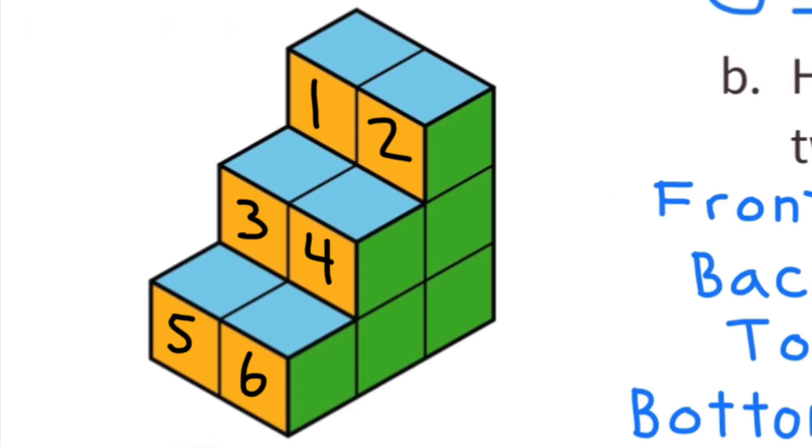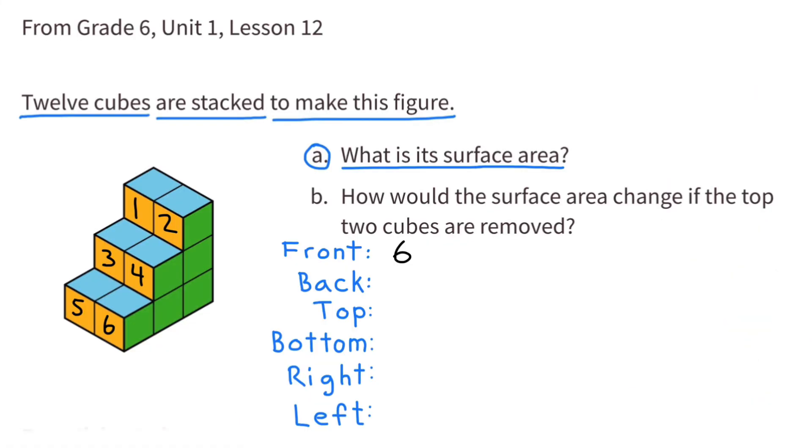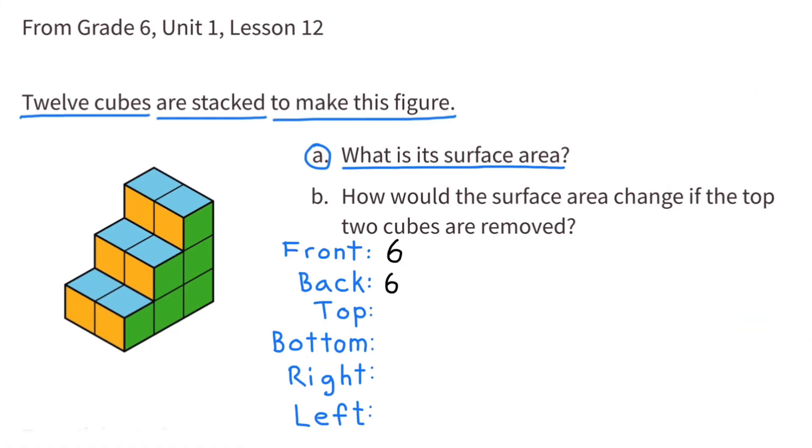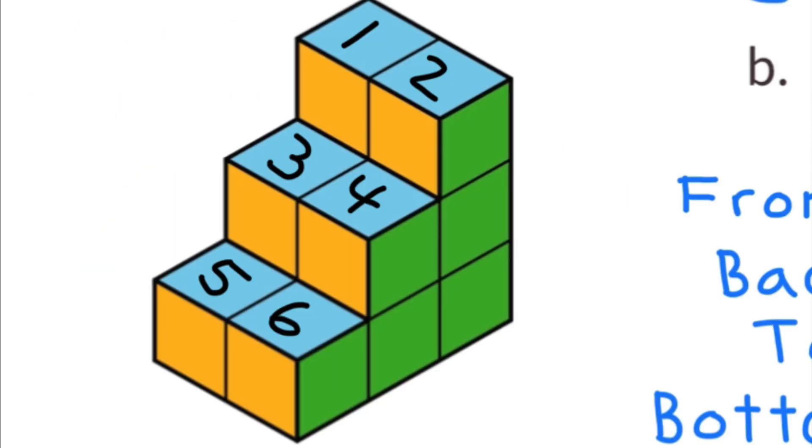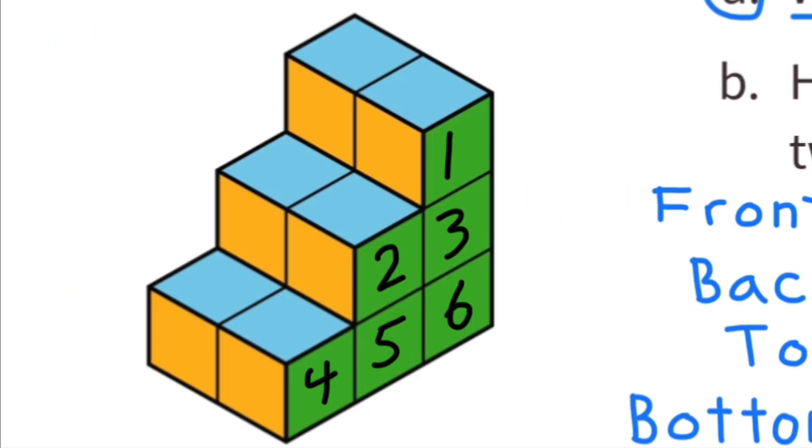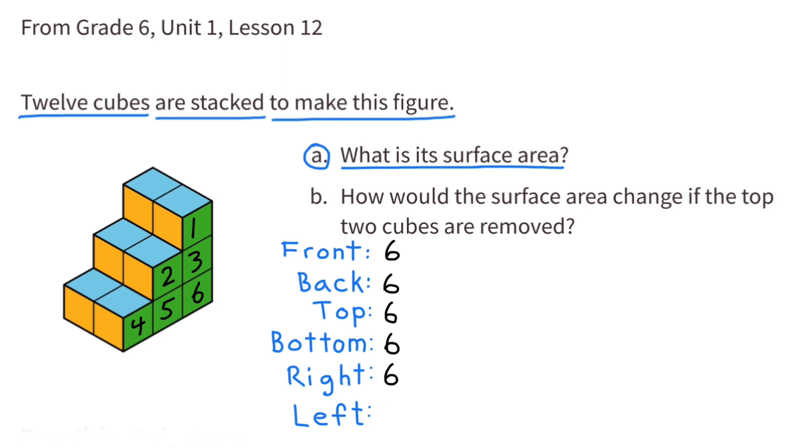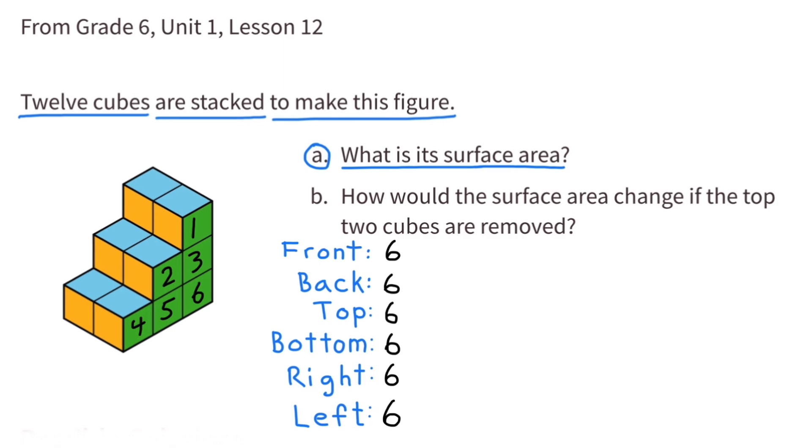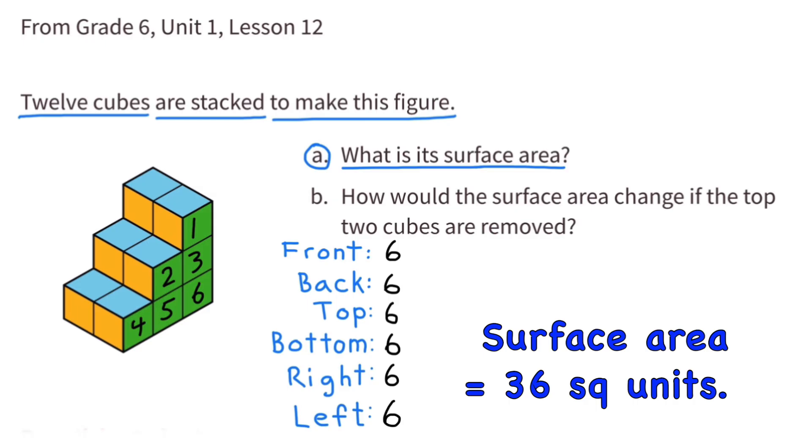Represented in gold and numbered 1 through 6, you can see 6 square units for the front. So the front would be a total of 6 square units, and the back would also be a total of 6 square units. Representing the top in blue, another 6 square units. Both the top and the bottom are 6 square units. Representing the right side in green, another 6 square units. Both the right side and the left side are 6 square units. 6 square units by 6 different sides equals a total surface area of 36 square units.